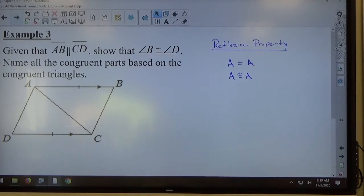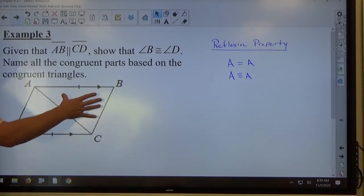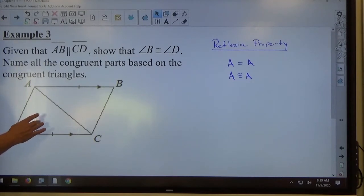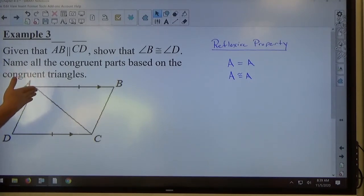Look at the two triangles in the picture created by making AC happen here. We've got ABC over here, we've got ADC over there. Can everybody see that segment AC is part of both of those triangles? All right? So the reflexive property, I know that AC is congruent to itself.